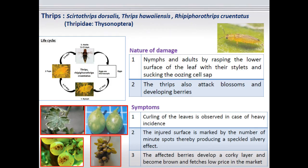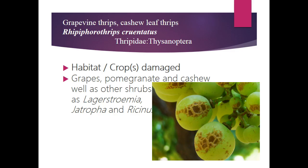Coming to thrips, the scientific name is Scirtothrips dorsalis, which is quite serious on both leaves as well as on tender berries. Both nymphs and adults cause damage. On the leaf, they remain on the undersurface and scrape the leaf tissue, resulting in silvery patches and curling of the leaves. Most importantly, they scrape the skin of tender berries. Initially the affected parts develop white patches, and later such patches become brown and get a patchy or corky appearance, which sometimes splits open leading to secondary infection and poor development of the bunches.